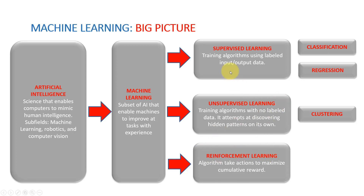Let's take a look at supervised learning. Training algorithms mainly rely on what we call labeled input and output data. Think of it like teaching a little kid how to walk — you expose the kid to different training data, you hold their hands, you show them through what we call labeled data, through input and output.